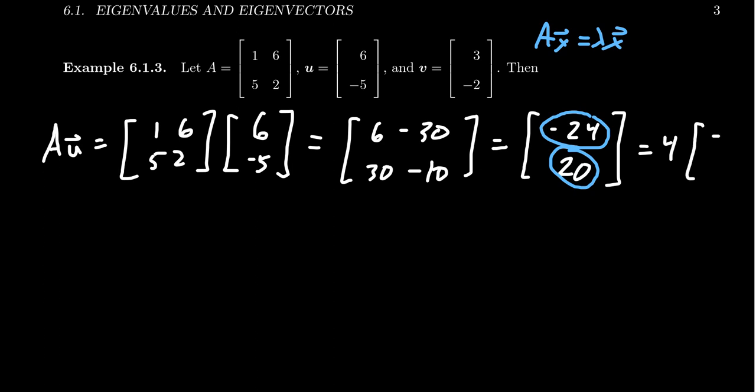So if we factor out the 4, we end up with -6 and 5. Now is that the vector U? Well, it's kind of close, but the sign is off. I have a -6 when I want a 6, and I have a 5 when I expect a -5. That's actually an easy thing to fix. Factor out the negative 1 now. So we actually have -4 times [6, -5]. And so you'll now notice that this is -4 times the original vector U.